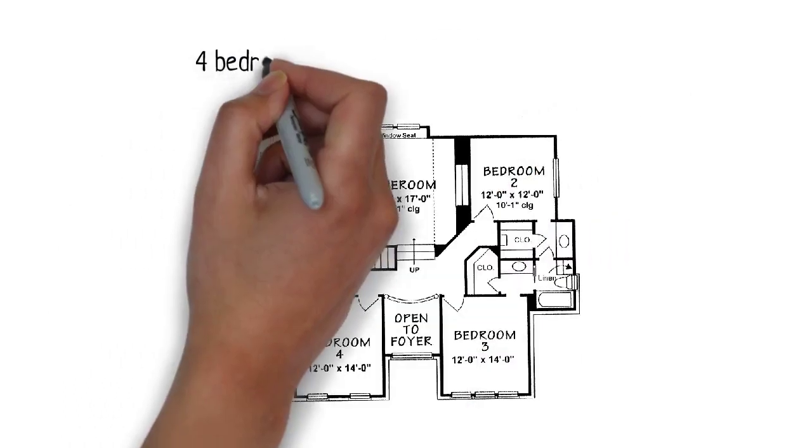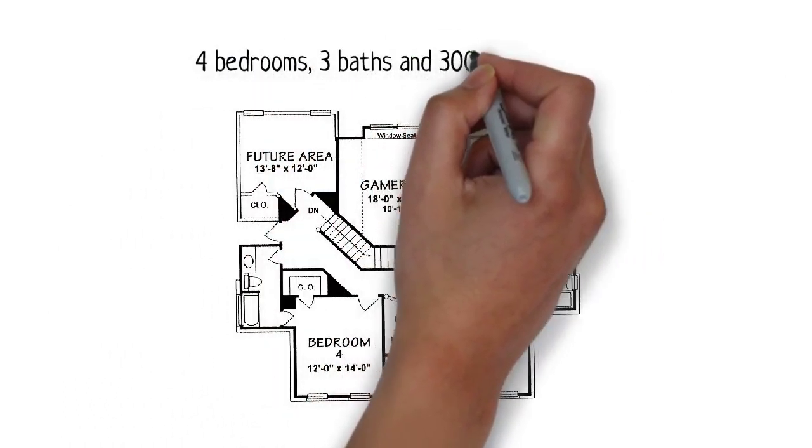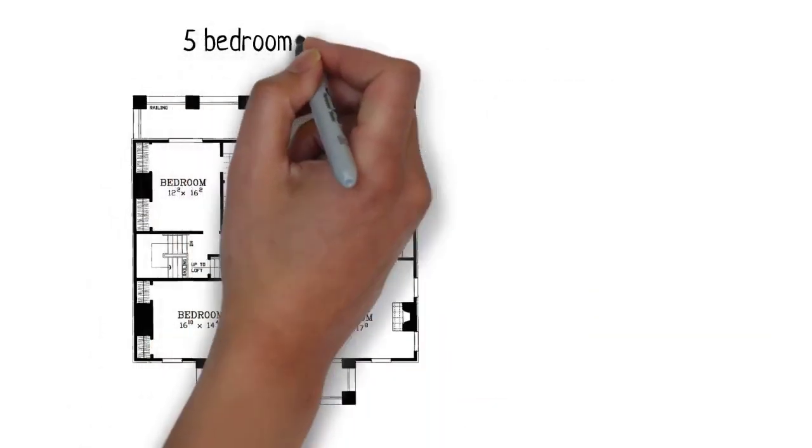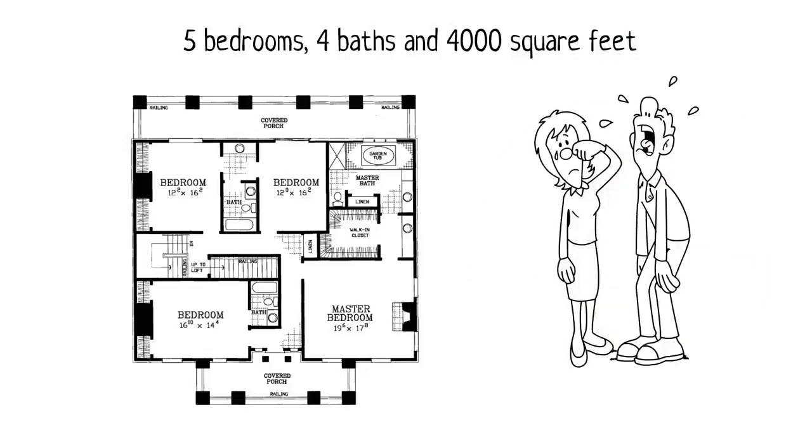For example, if neighbors are all 4 bedrooms, 3 baths, and 3,000 square feet, additions that make your home 5, 4, and 4,000 will make yours harder to sell.